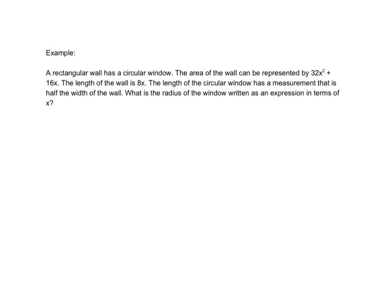We've got an example word problem here. A rectangular wall has a circular window. So let's just draw this out. Nice rectangular wall, circular window in there. The area of the wall can be represented by 32x squared plus 16x. The length of the wall is 8x. The length of the circular window has a measurement that is half the width of the wall. What's the radius of the window written as an expression in terms of x? So a few things we're given.